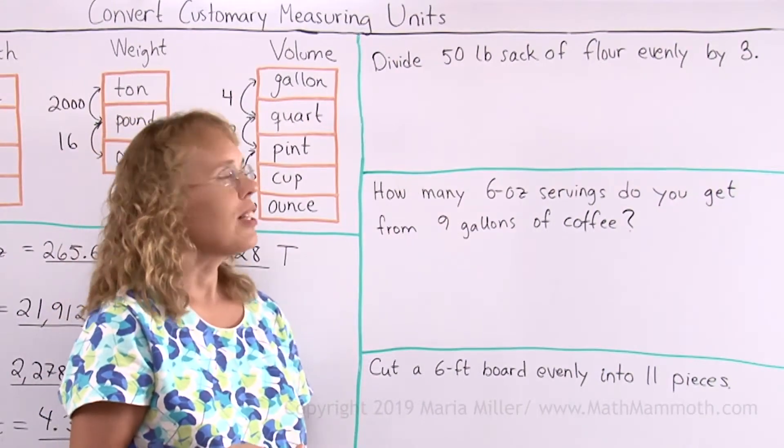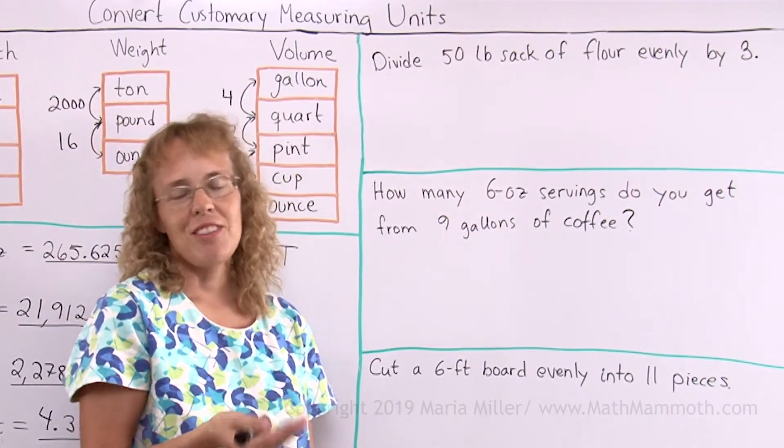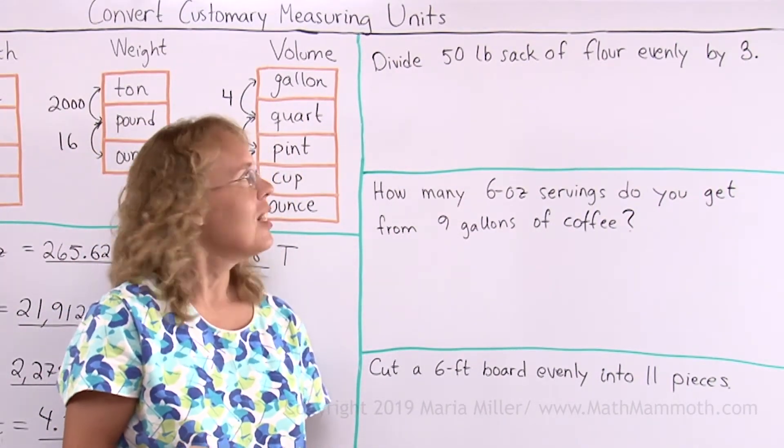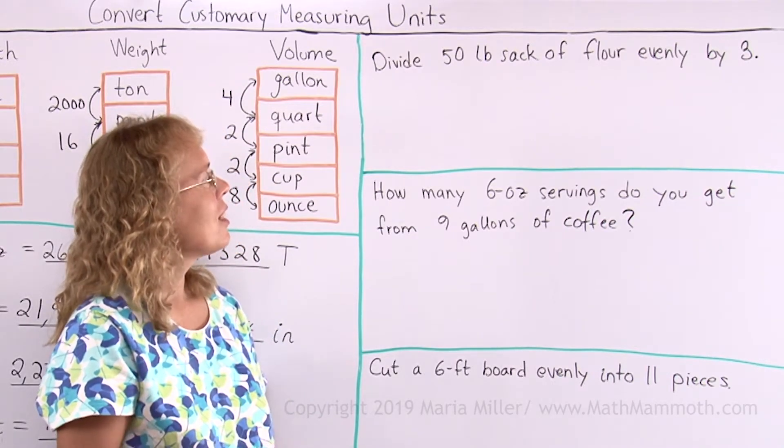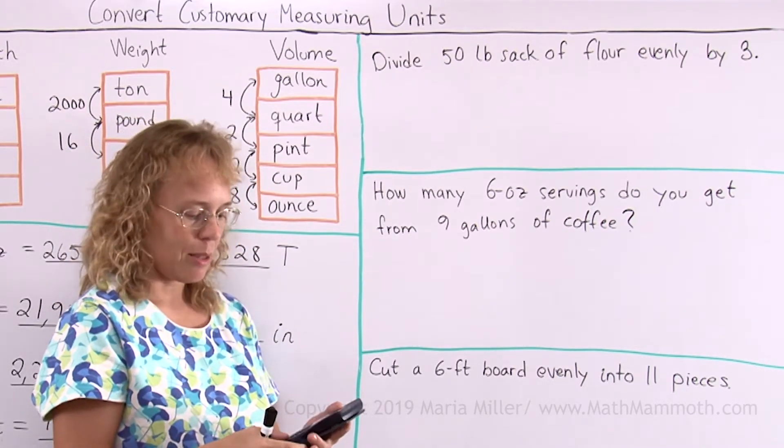Divide a 50 pound sack of flour evenly by 3. Now 50 is not divisible by 3, so when I divide 50 by 3, I will get a decimal number.